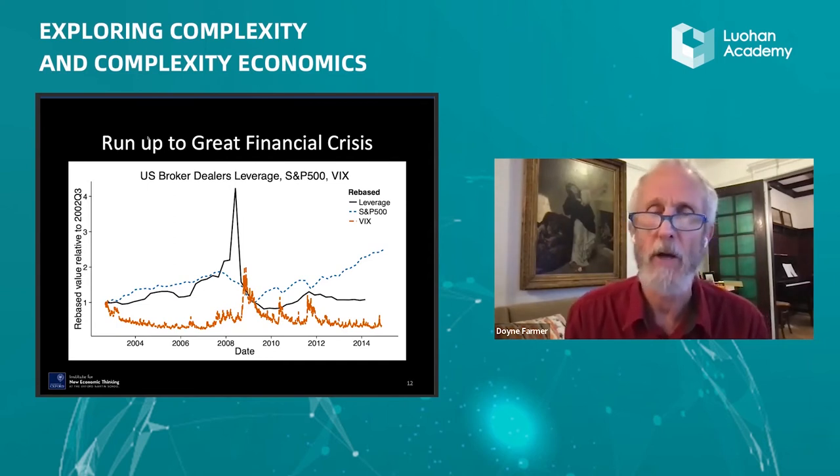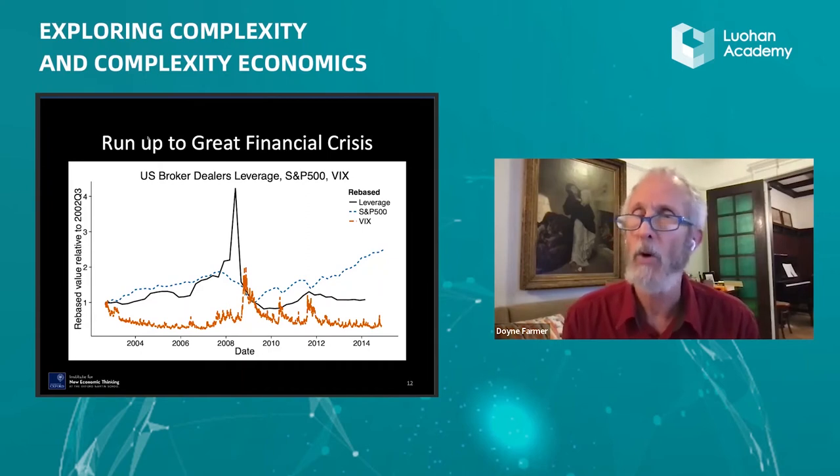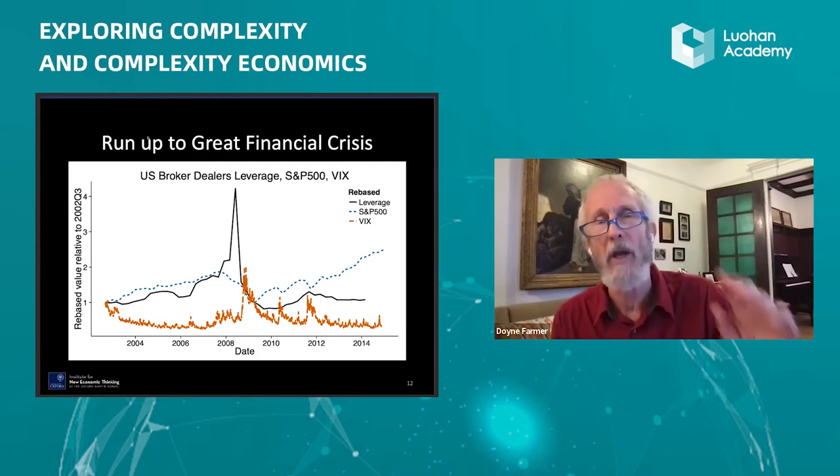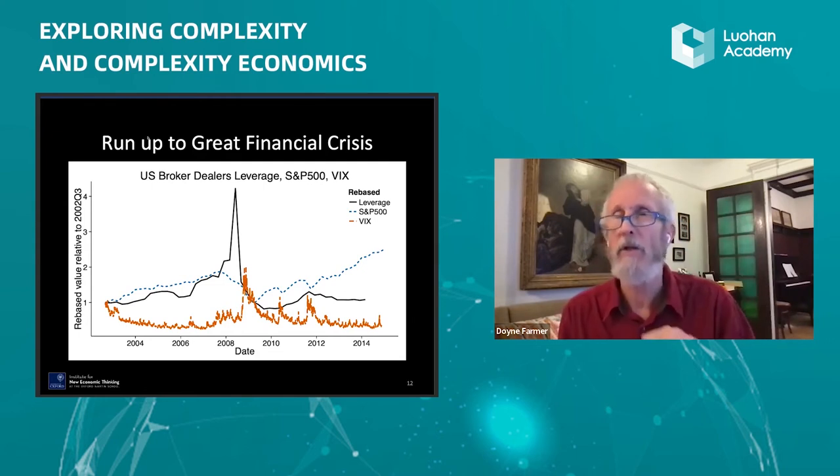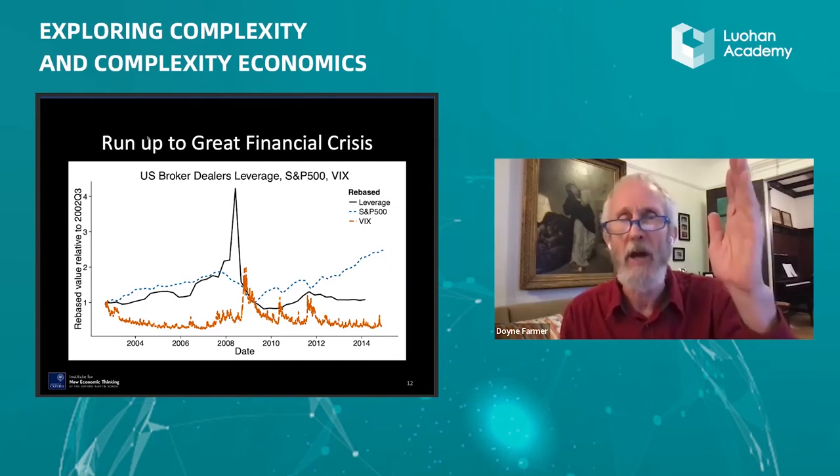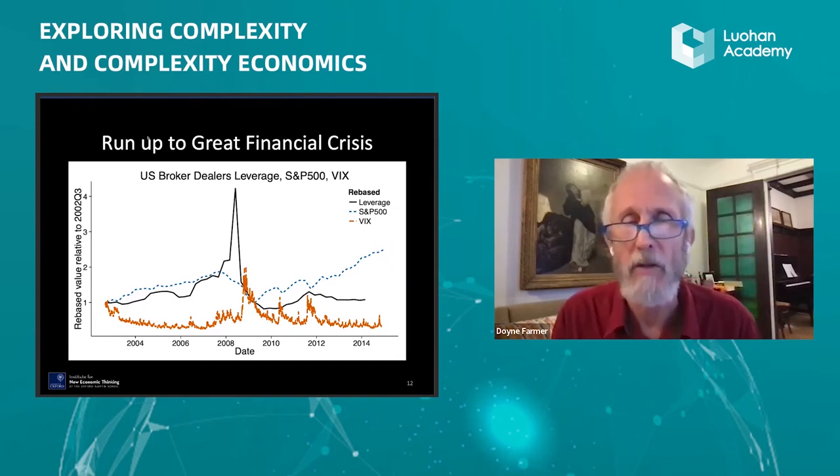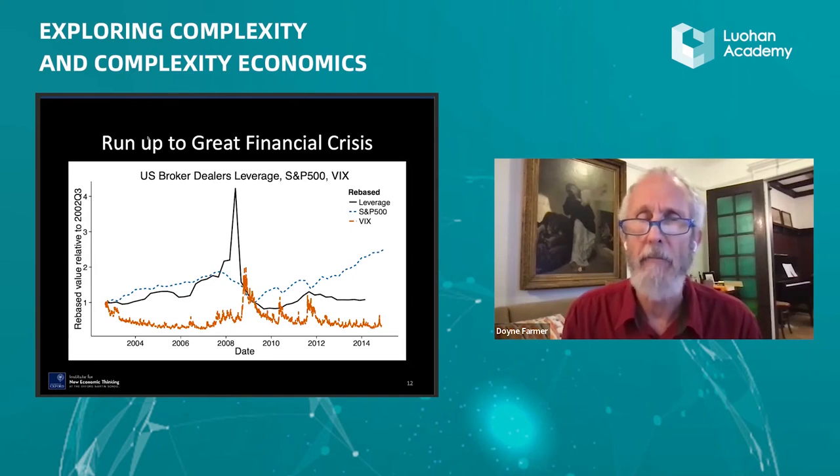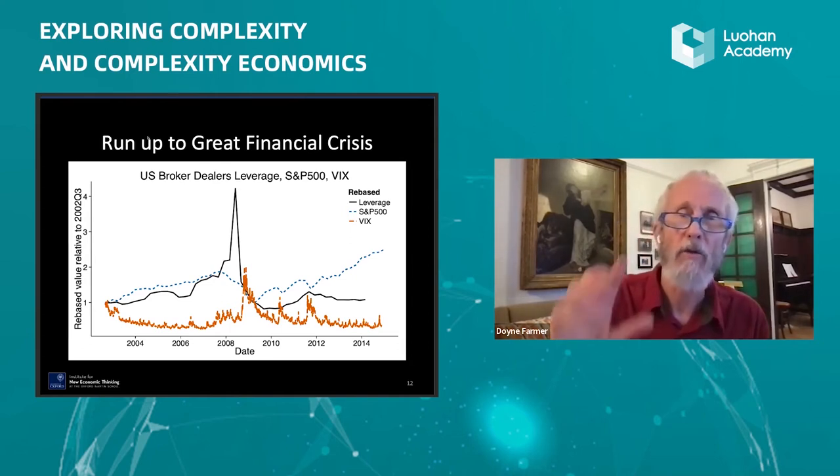We see the rust-colored curve, which is the VIX, that's a volatility index for the stock market. And we see the solid black line, which is the leverage of broker-dealers. And so what you see is there's this long period where the stock market makes a nice smooth run-up, where volatility gets very low, where leverage gradually creeps up until it spikes. And then following the spike, there's a big spike in volatility and things go into a different mode for a while.